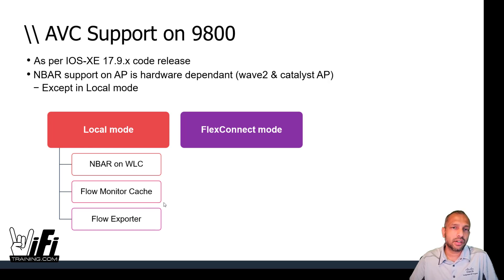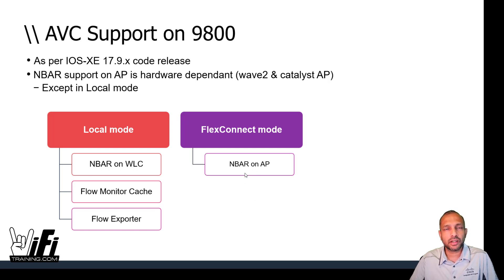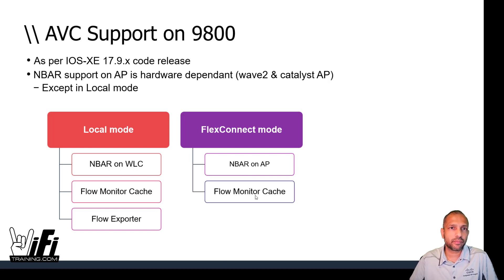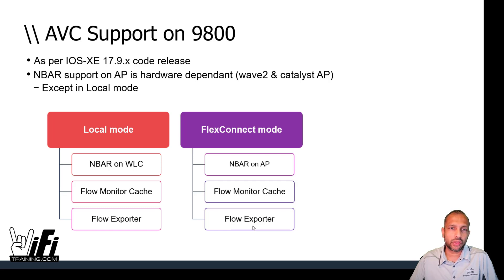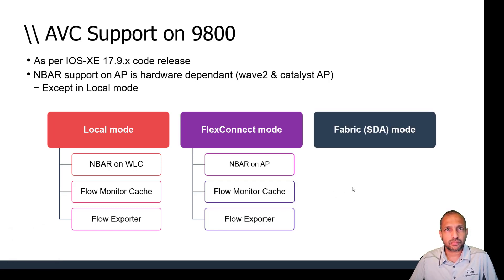In FlexConnect mode, whether central or local switching, actions must be taken at the AP level. This means the ABC flexible NetFlow configuration is pushed down to the AP — which is why you need Wave 2 or Catalyst APs. The flow monitor cache is maintained at the AP level and flow export can be done. In AireOS, NetFlow on FlexConnect mode is not supported, so this is something worth testing.